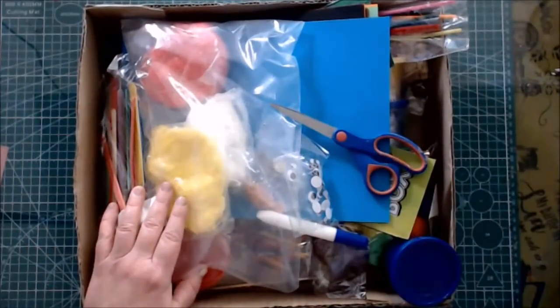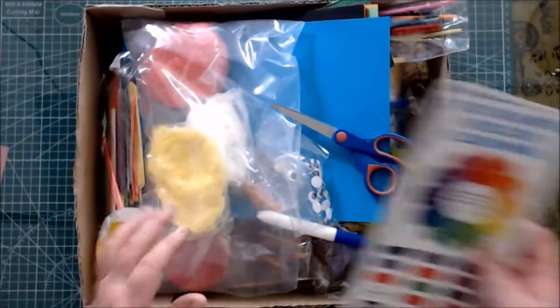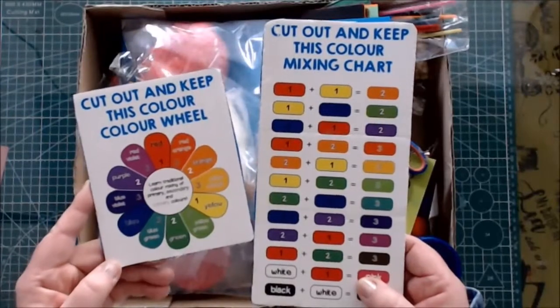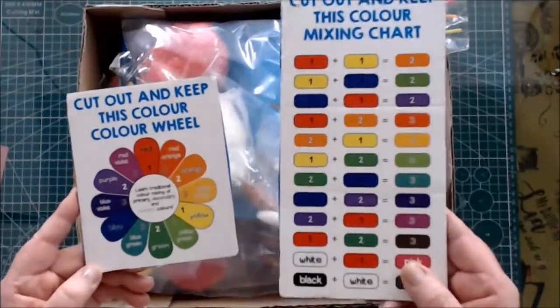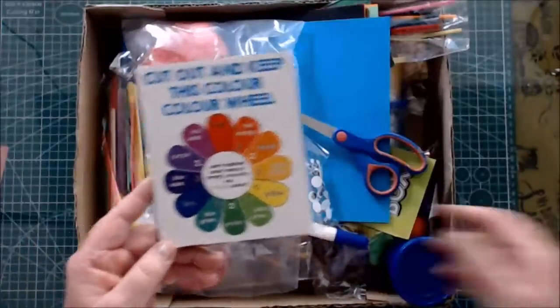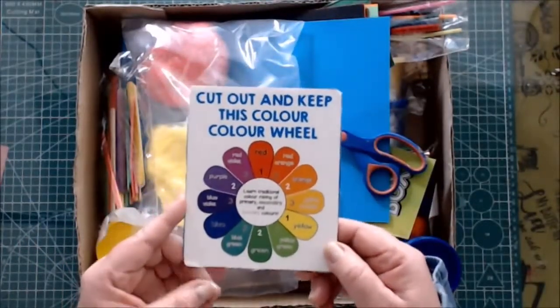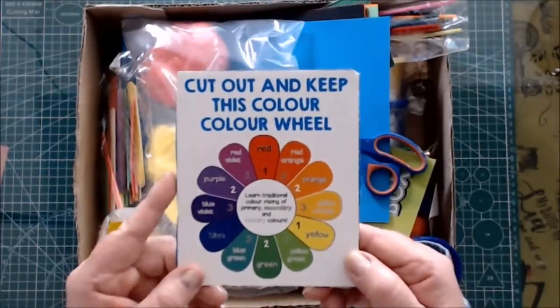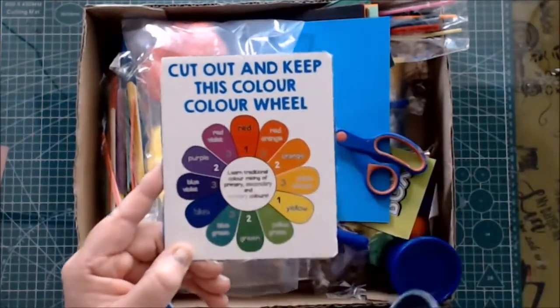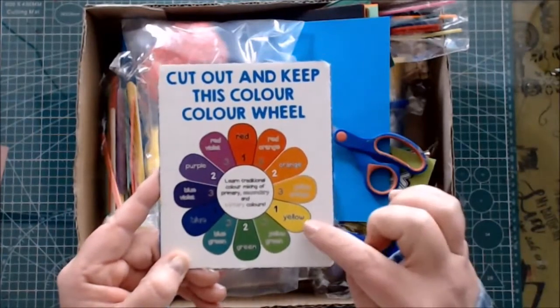On the back of your box there was a color mixing chart and a color wheel. I've already cut mine out and we are going to learn about colors today. On your color wheel we've got lots of colors, but I'm going to start with the primary colors: yellow, red, and blue.